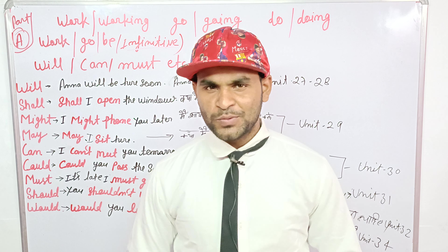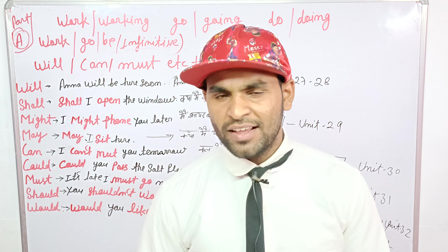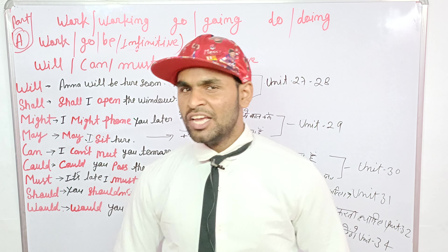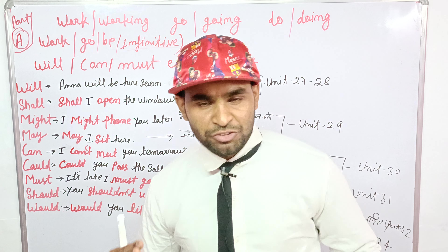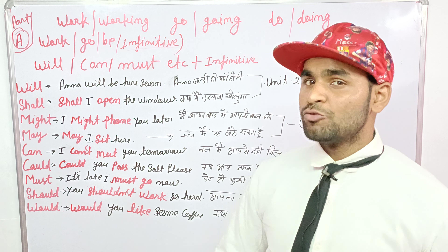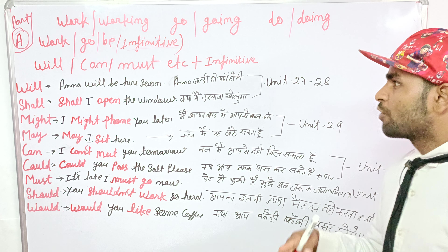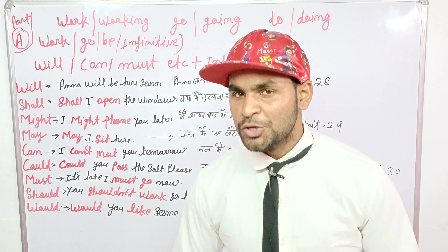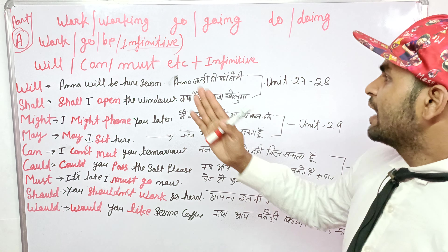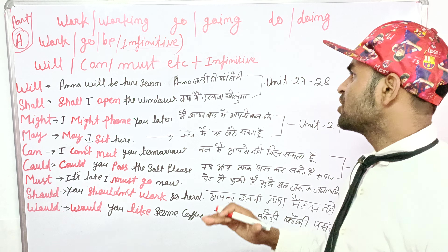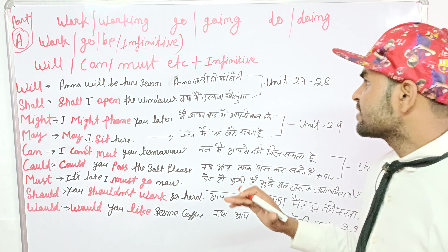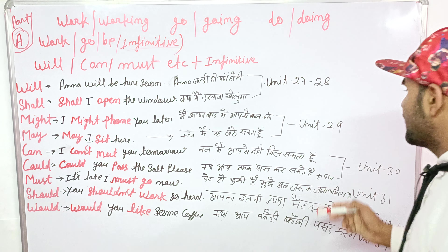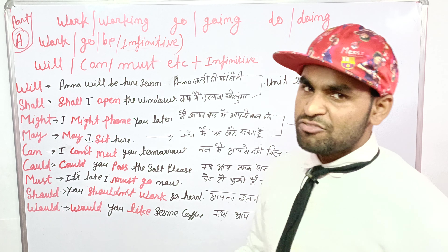Hello dear students and English learners. Welcome to this class. This is Ankeet Roham English 1-6 with Ankeet, and today we are going to learn Unit 51. Unit 51 is about work/working, go/going, and do/doing — will, can, must, etc. plus infinitive. As you can see, we will also revise the chapter we have read before.